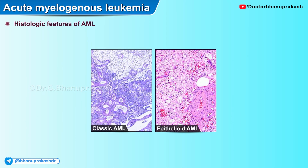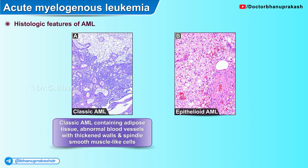Here is another histopathological image in both panel A and panel B. Panel A shows a classic acute myelocytic leukemia containing adipose tissue, abnormal blood vessels with thickened walls and spindle-shaped smooth muscle-like cells. The whitish columns seen on the upper portion of this slide represent the fat tissues. The hollow surrounded by pinkish color seen on the right lower portion of the slide is representative of the blood vessels.